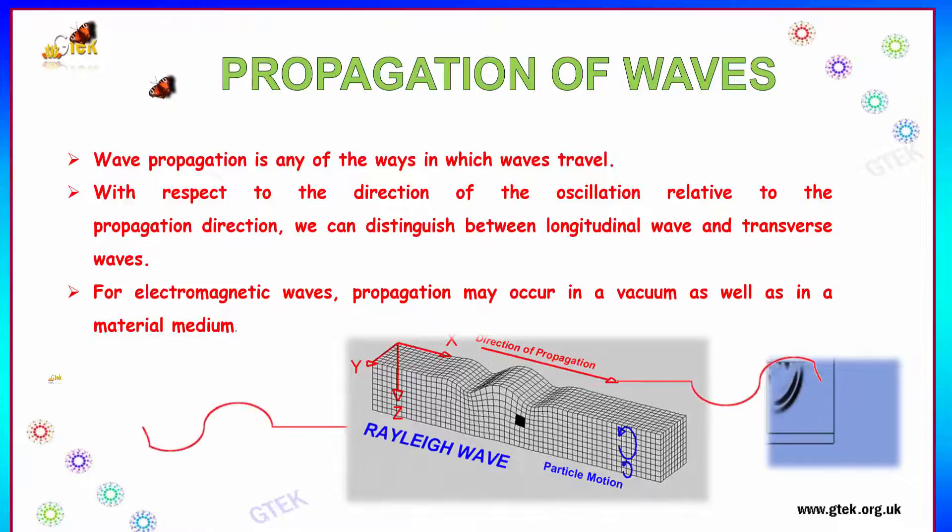Wave propagation is any of the ways in which waves travel. With respect to the direction of the oscillation relative to the propagation direction, we can distinguish between longitudinal wave and transverse waves. For electromagnetic waves, propagation may occur in a vacuum as well as in material medium.